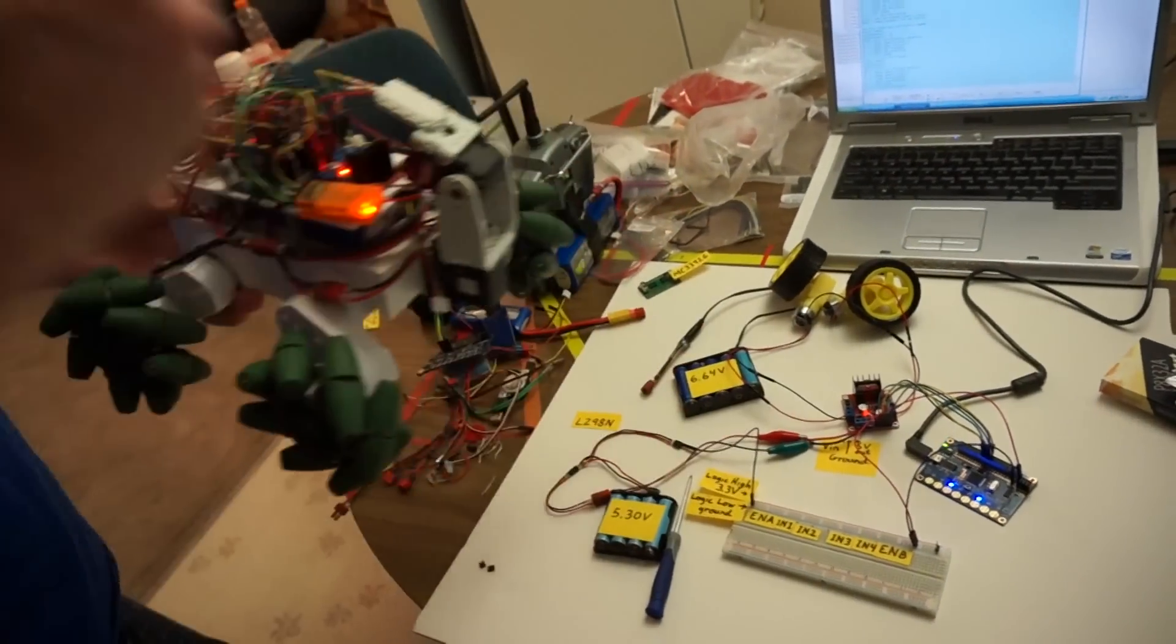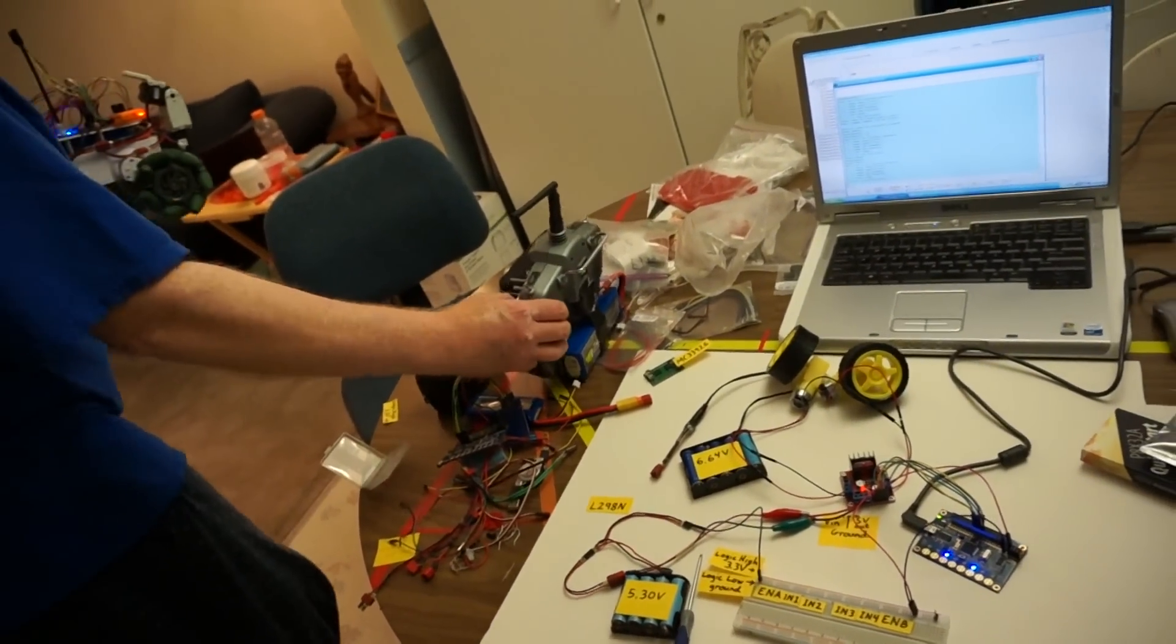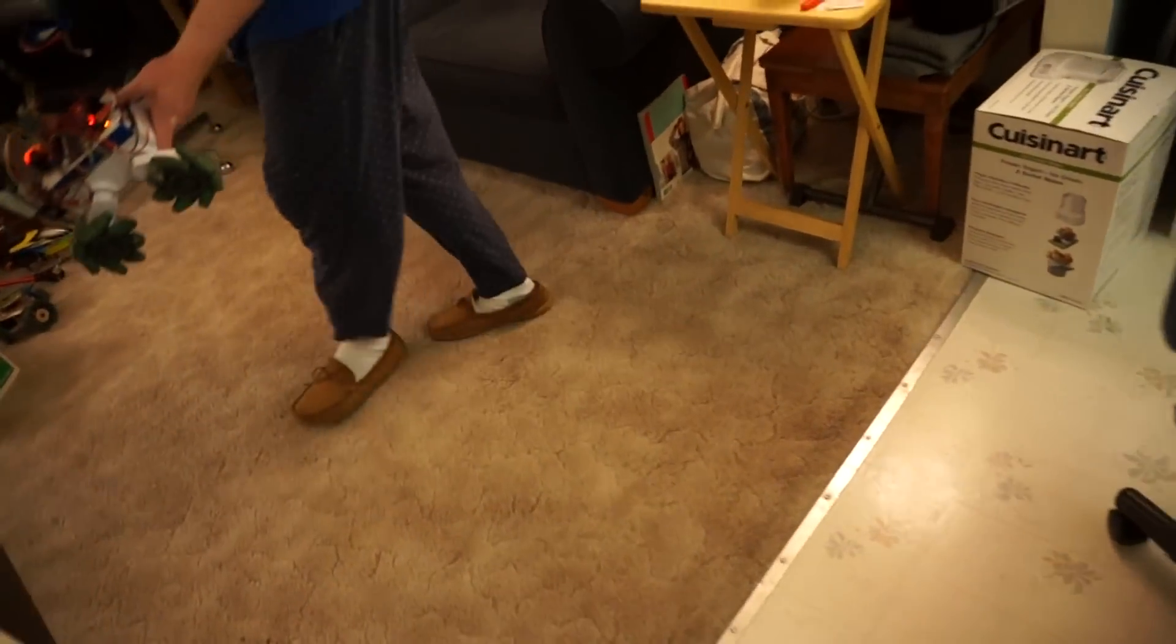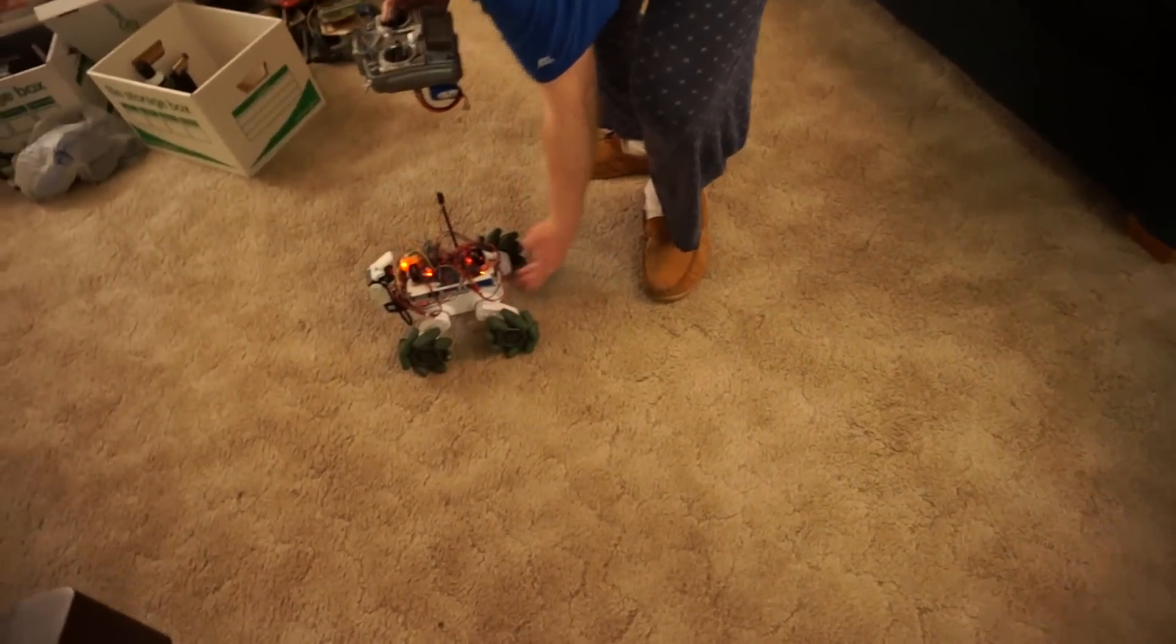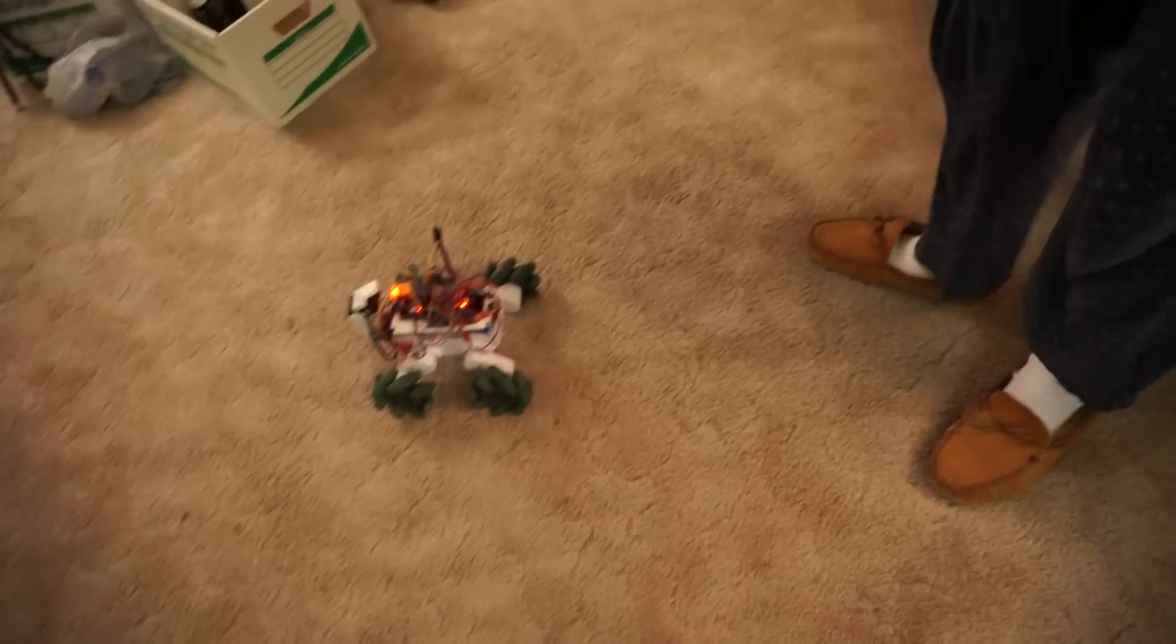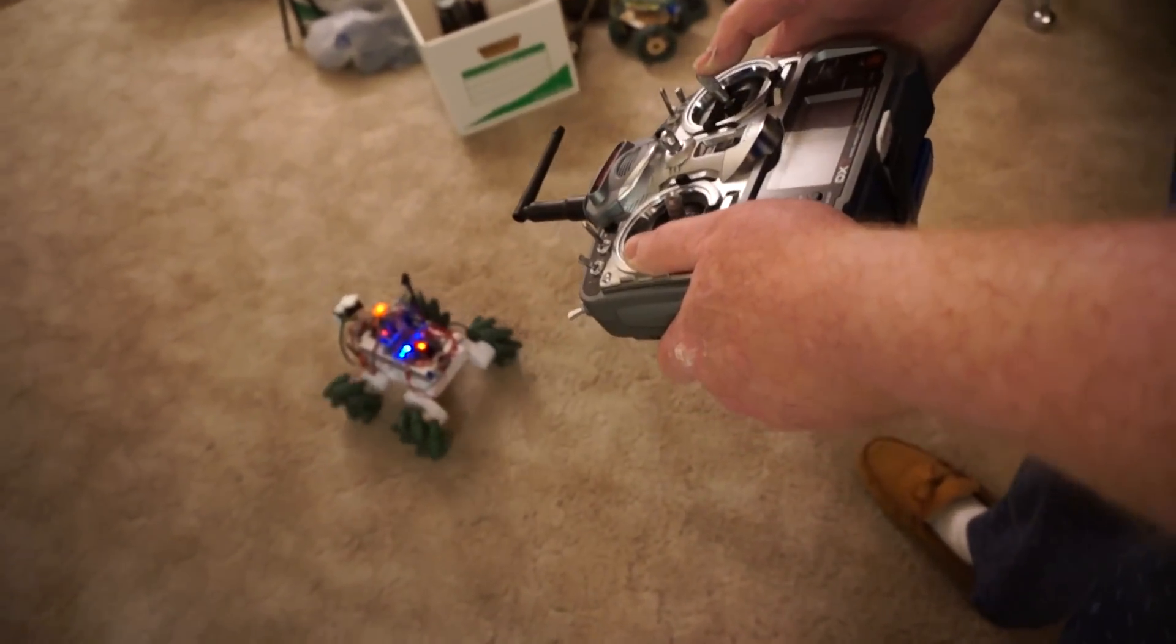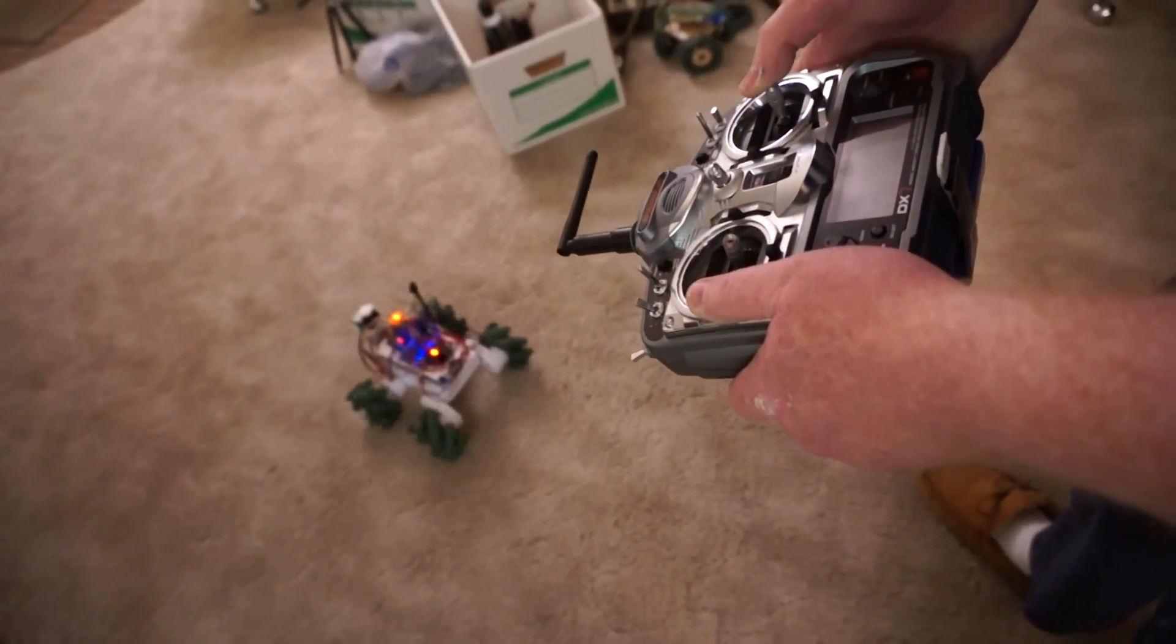And so the radio channels can receive, the QuickStart board receives the pulses from the radio. And so I can control it with the radio control system here. And so if I push forward, the robot will go forward, back to back.